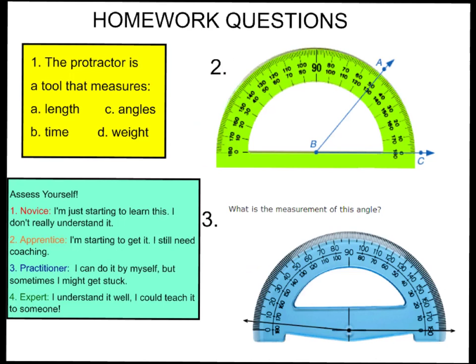So here are your three homework questions. Question number one says, the protractor is a tool that measures what? A, length. B, time. C, angles. D, weight. Number two, look at angle ABC. And I want you to measure this angle and write it down. And then let's look at question number three, what is the measure of this angle? Alright, and I want you to write this angle measurement down. And I want you to be ready to come to class tomorrow, ready to discuss your three answers.